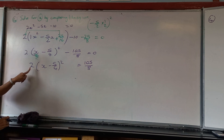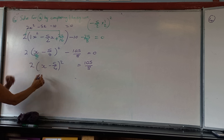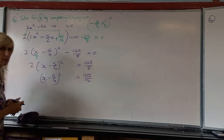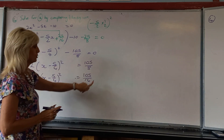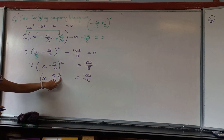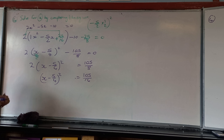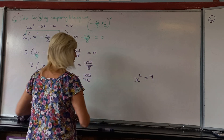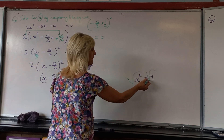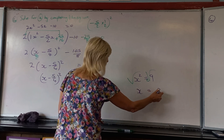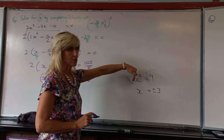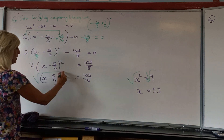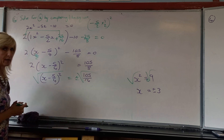To find X alone, do it step by step. First, take the 105 over 8 to the other side, making it positive 105 over 8. Then get rid of the 2 by dividing both sides by 2 — dividing 105 over 8 by 2 gives 105 over 16. Then to remove the square, you square root both sides — but remember, you must put plus or minus, because both positive and negative values squared give the same result. So (X minus 5 over 4) becomes plus or minus the square root.